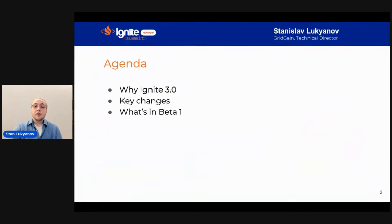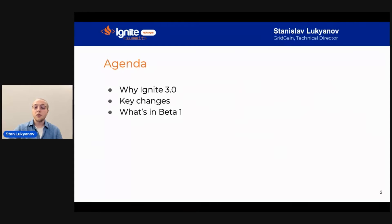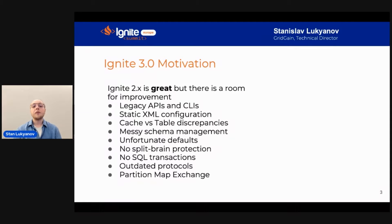First, I want to start with why Apache Ignite 3 exists — what is the motivation behind it. Then we will look at the key changes coming in Apache Ignite 3.0. And then we will talk a bit about Apache Ignite 3 Beta 1, a release that is coming out these days and the latest release in preparation for Apache Ignite 3.0.